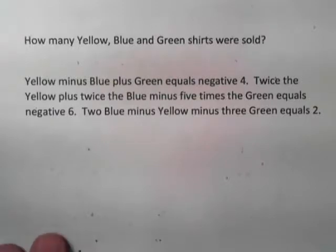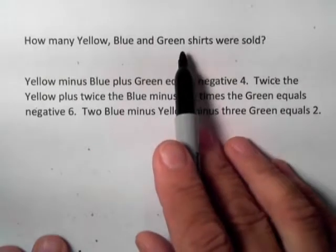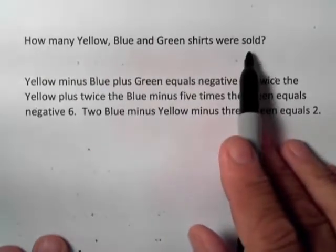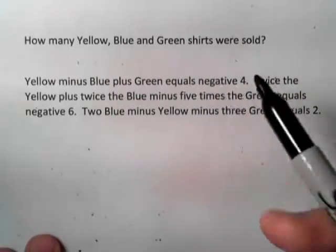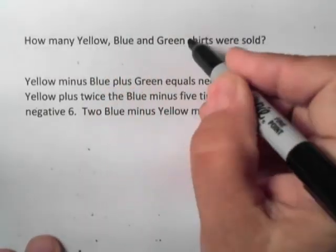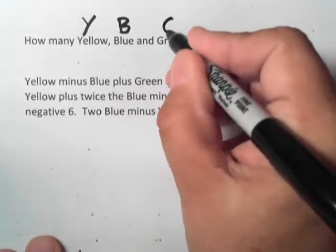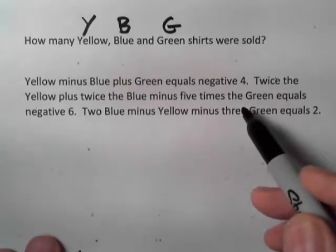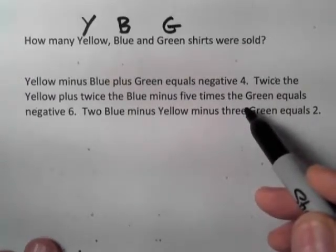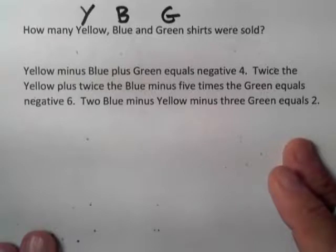Let's look at one more example of a 3x3 system. Here we're asked how many yellow, blue, and green shirts were sold — this could be shirts sold in a store for a day. Good letters to use are the first letters of the colors: Y for yellow, B for blue, and G for green. That allows us to keep track of who we're talking about. We've got three sentences to translate into equations.